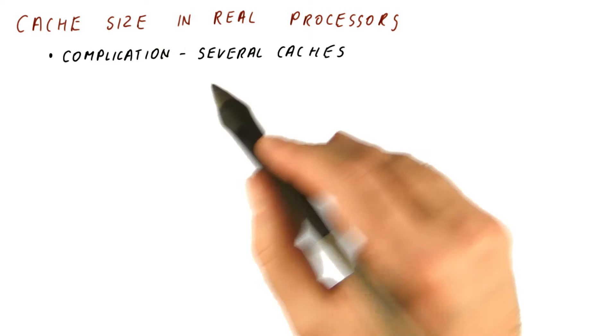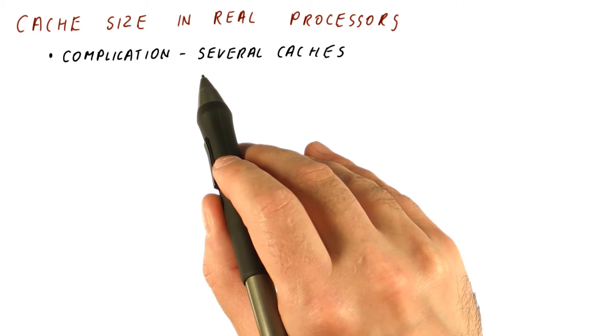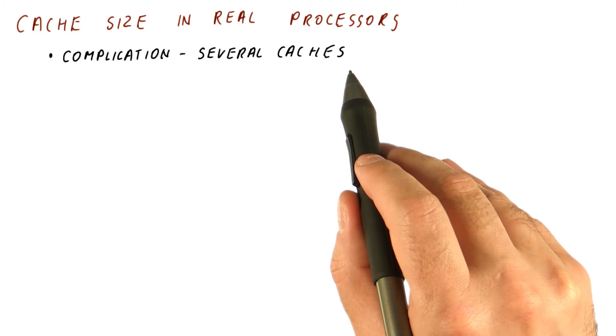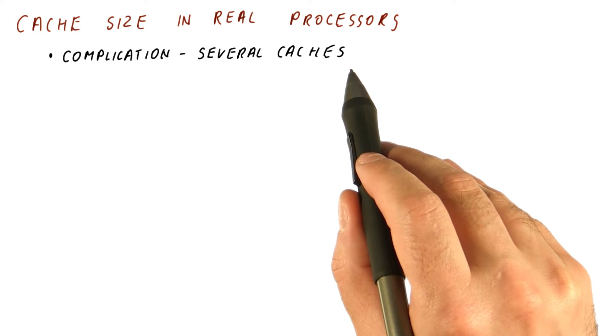There is a complication there in that modern processors usually have several caches, not just one. So depending on which cache we're talking about, it might be larger or smaller.